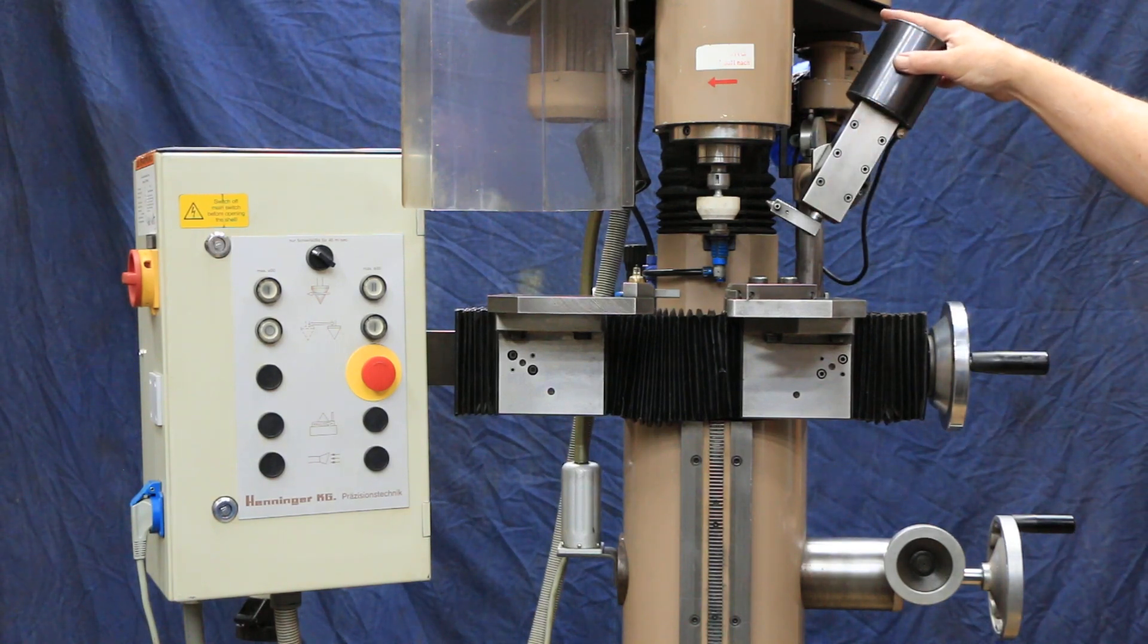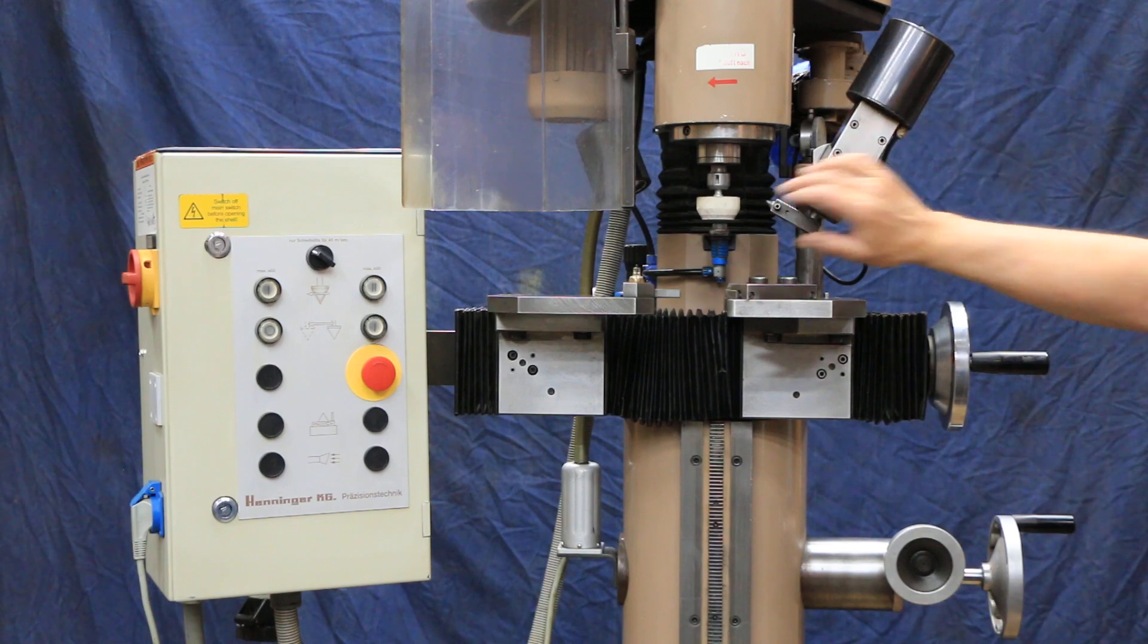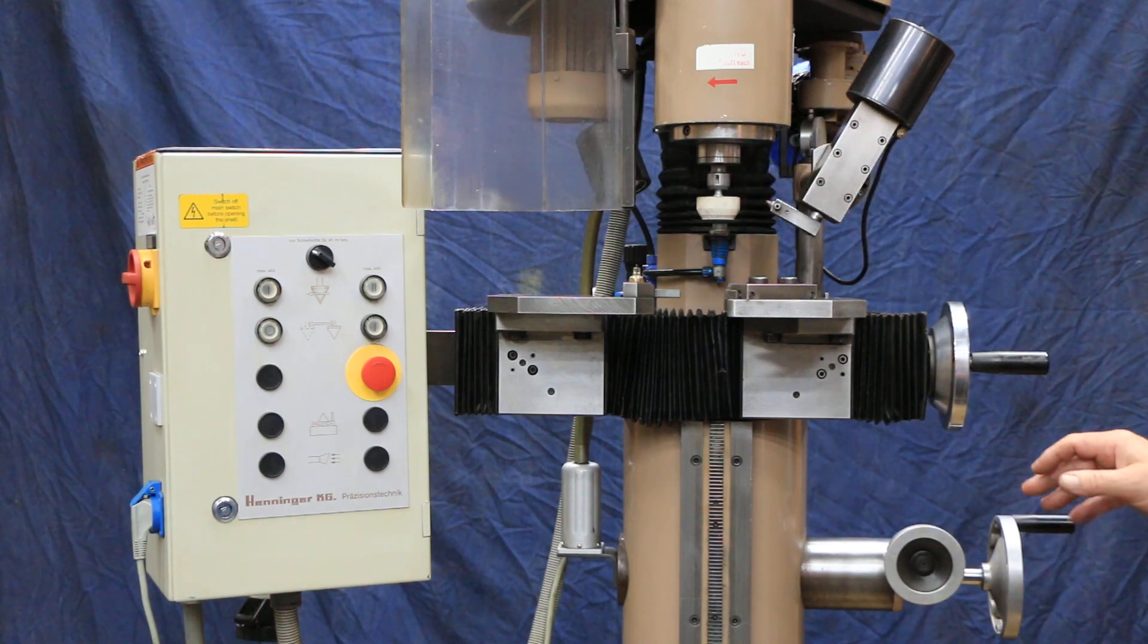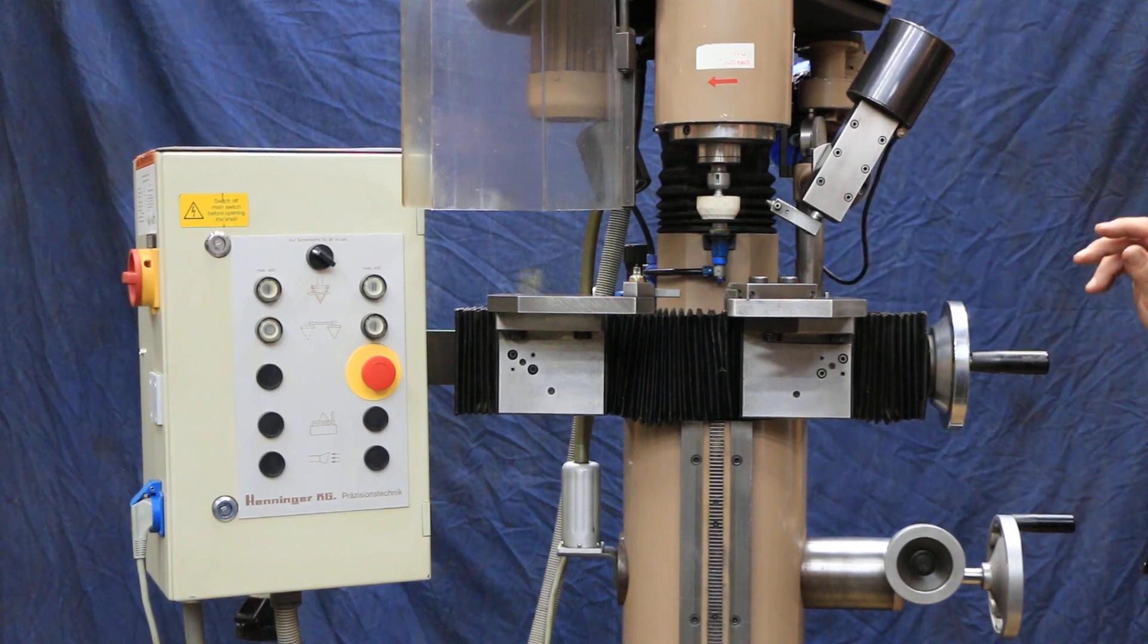You've got a mechanical and motor driven dressing tool that you can slide in close to your stone, depending on what kind of stone you're going to put on it, that's going to go up and down and dress the wheel.